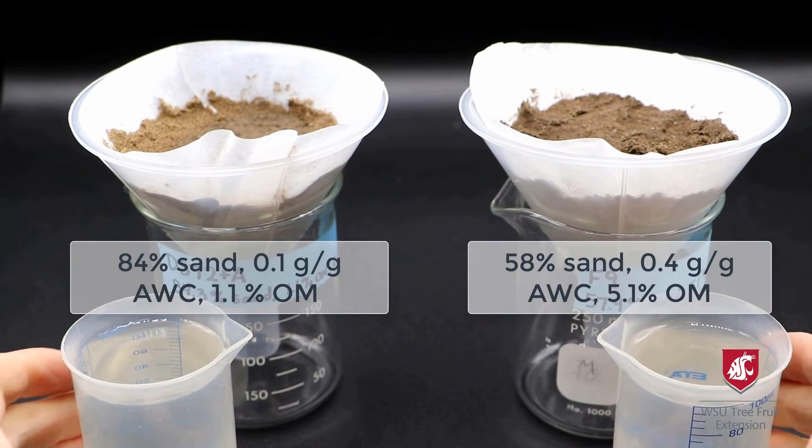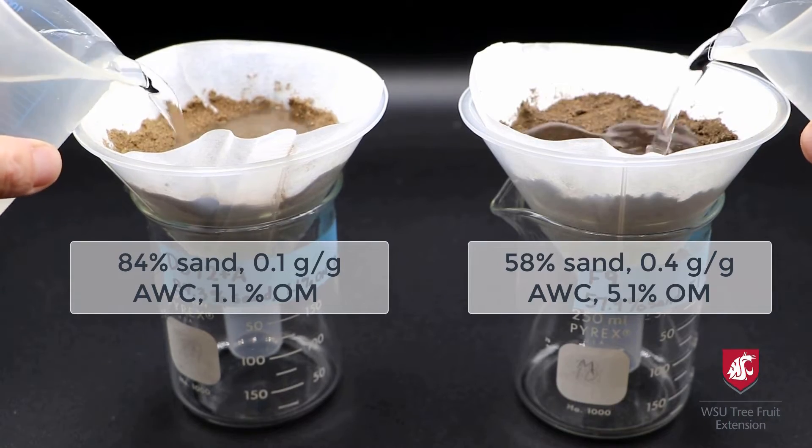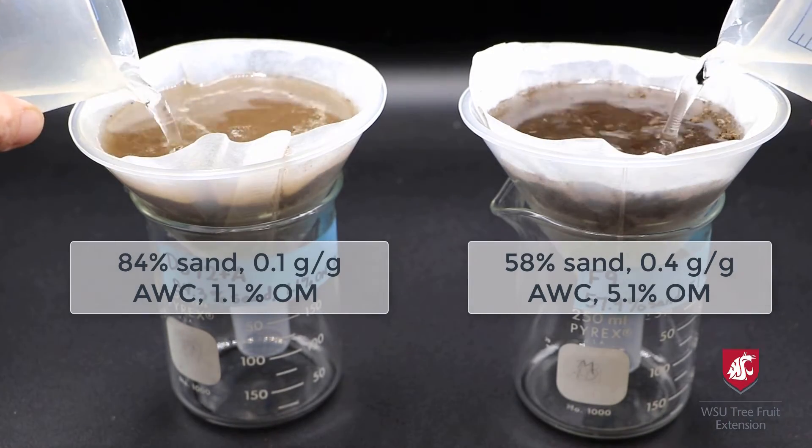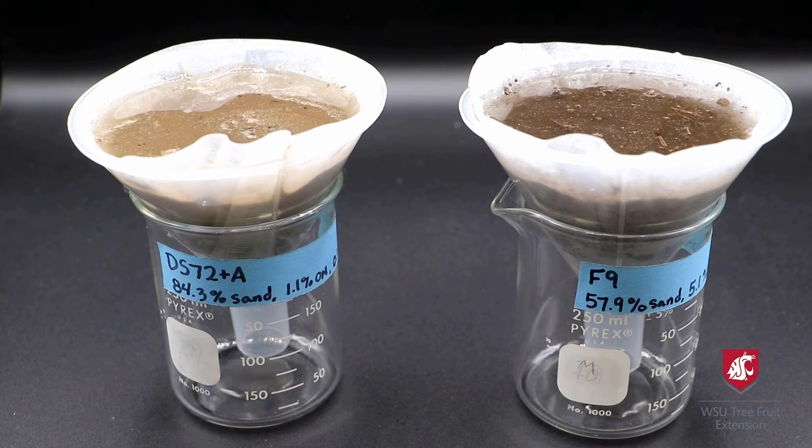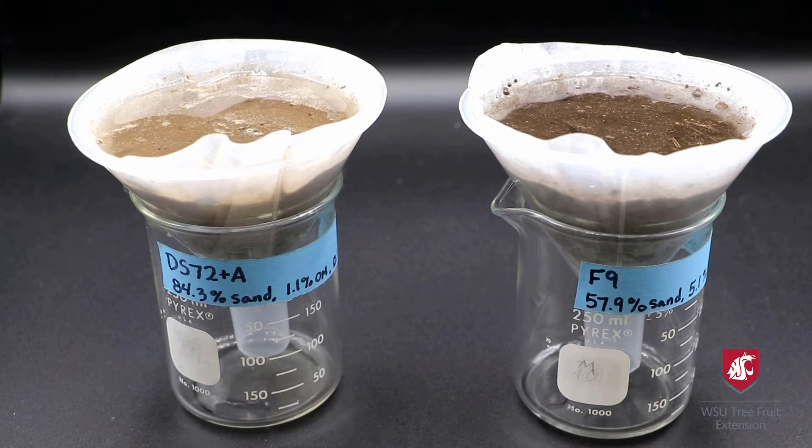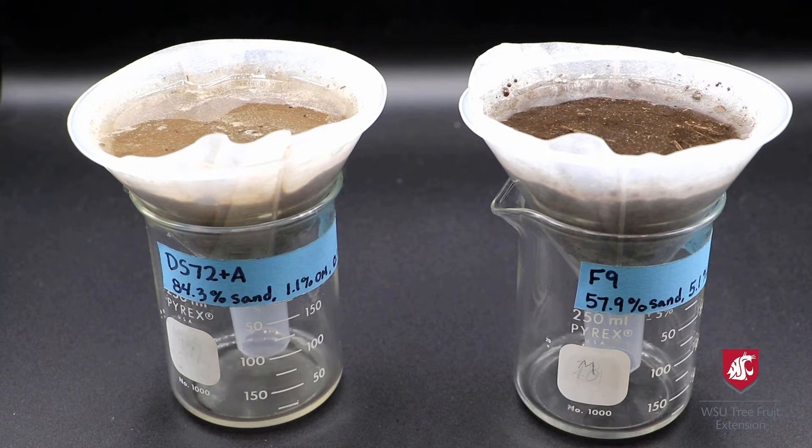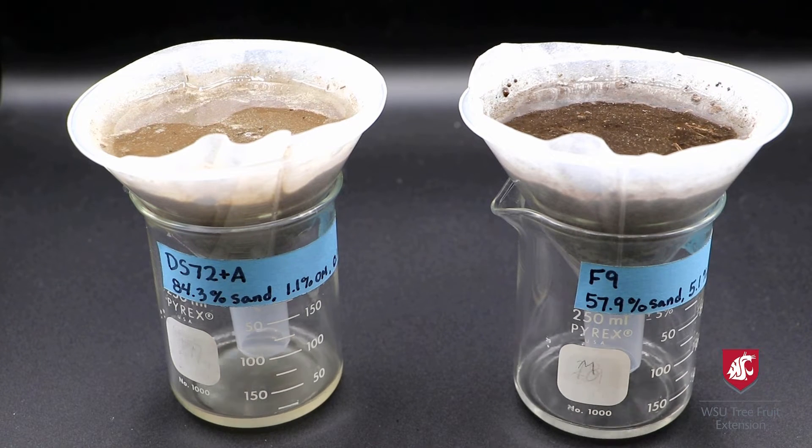The available water capacity of the soil is the amount of water held in the soil available for plants. For example, in these two orchard soils, the soil at left has 84% sand and only 0.1 grams per gram of available water capacity.